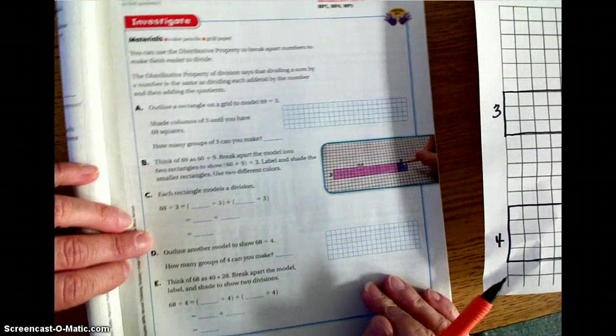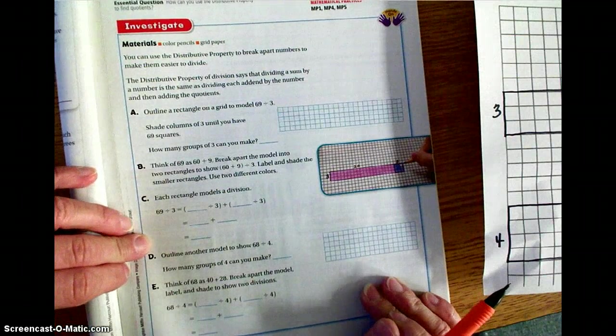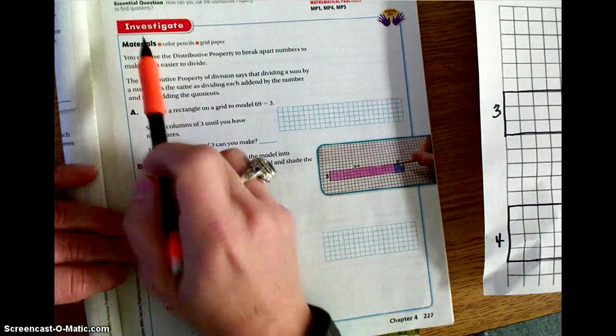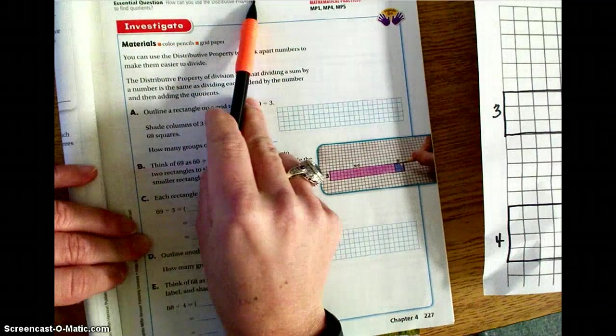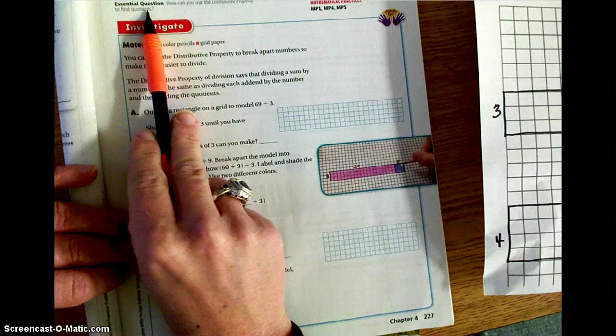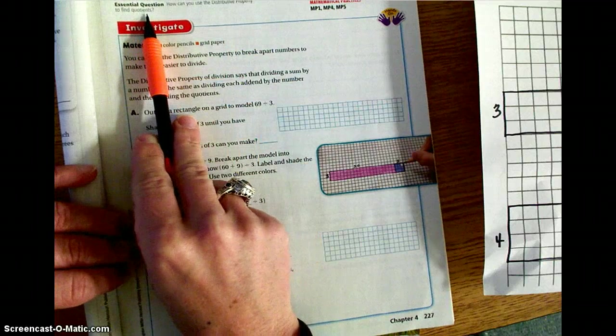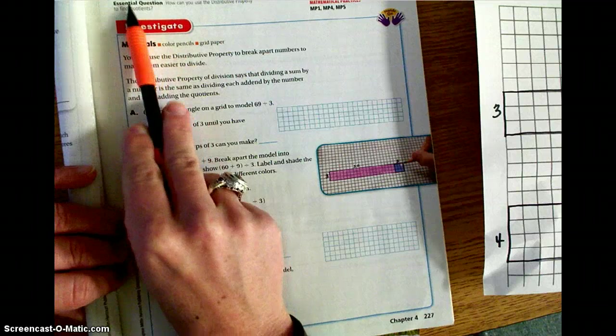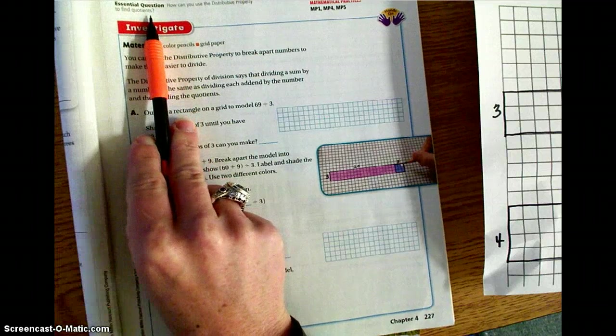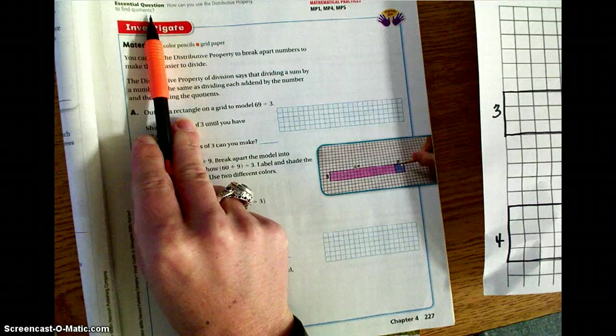Okay, welcome to your flipped lesson 4.6. Today we are going to be taking a look at division and the distributive property. Our essential question is how can you use the distributive property to find quotients? Please remember that quotients are the answer that we are looking for in a division problem. That is a key word that you will need to know.